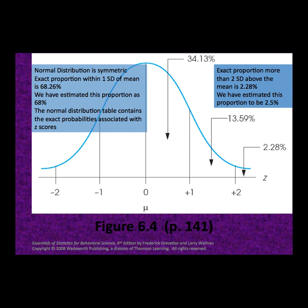Consider a z-score of positive 2. How much of the data falls above a z-score of positive 2? Up to this point in our class, we have estimated the proportion of data between z of negative 2 and 2 to be 95% of the data. Therefore, 5% is left over with 2.5% being in the tail. You can see that the actual percent above a z-score of 2 is 2.28% of the data. Our estimation is close.